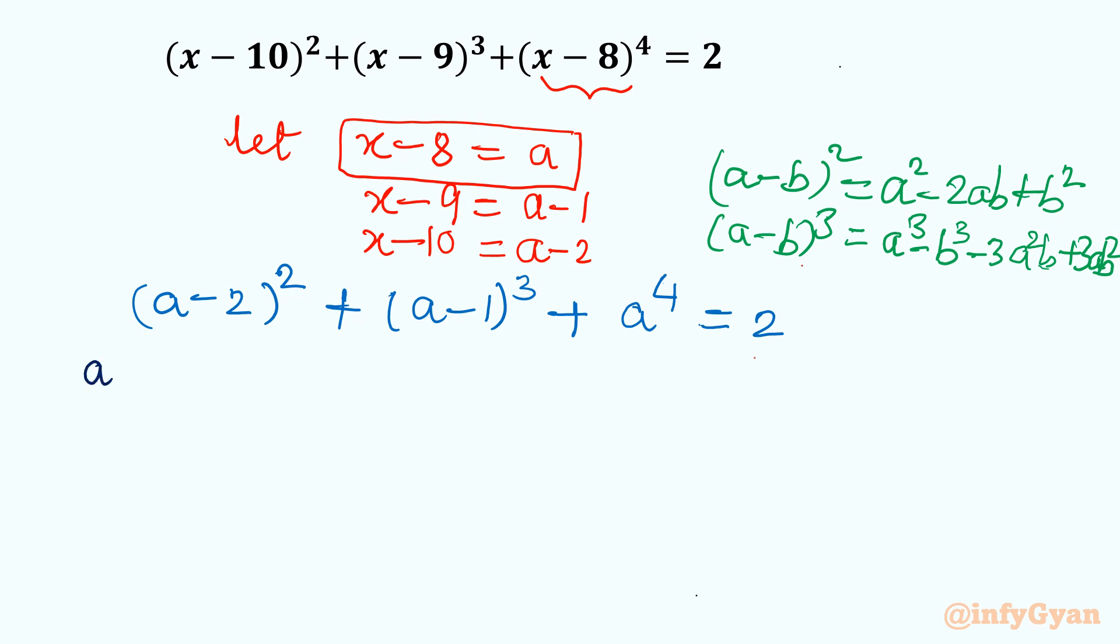Let us apply here. (a-b) whole square: I will write a² + 4 - 4a, plus (a-b) whole cube: a³ - 1 - 3a² + 3a, plus a⁴ equal to 2.